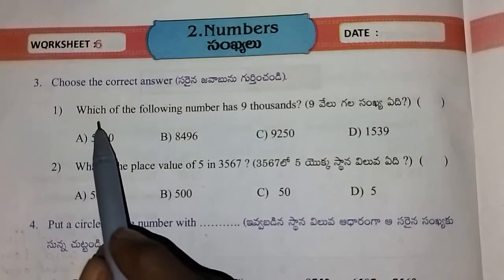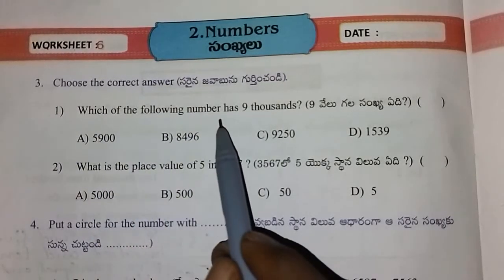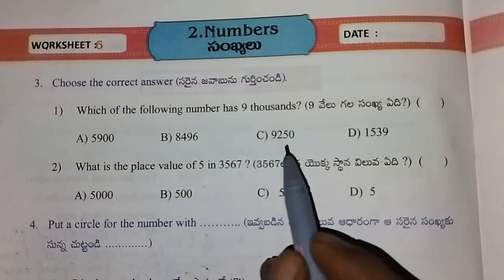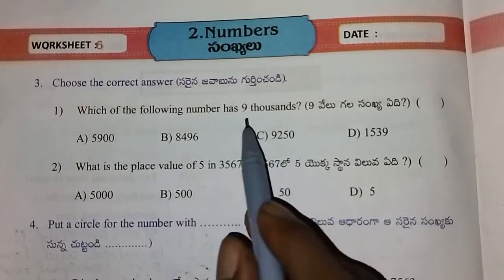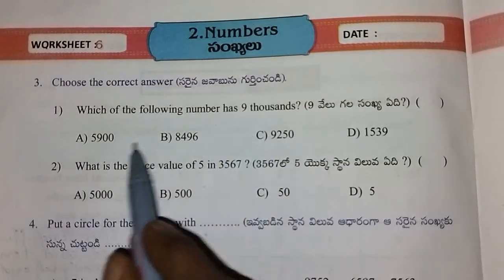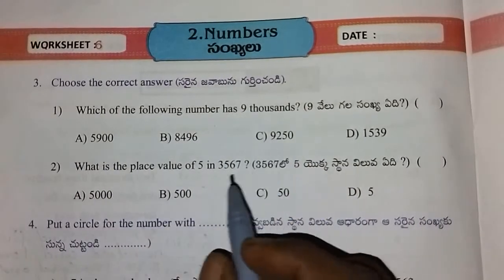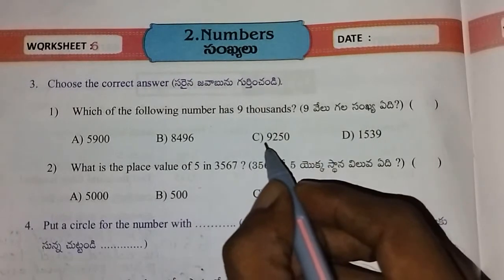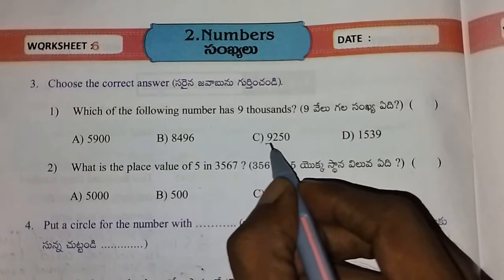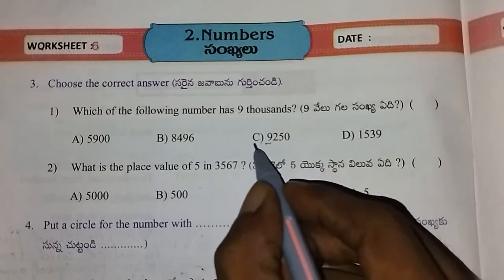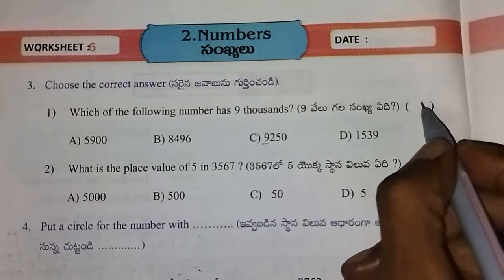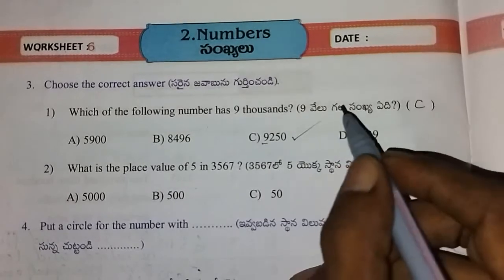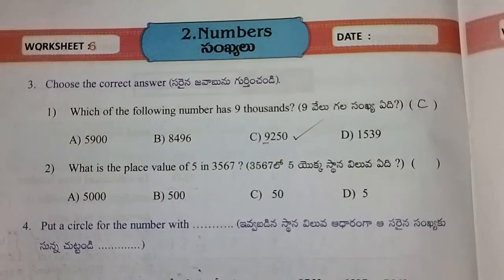Here we go. Which of the following numbers has 9 in the thousands place? In the thousands place, 9 is the number. Show me — thousands place, 9. See the answer. Next.